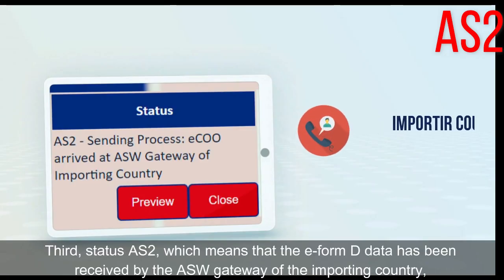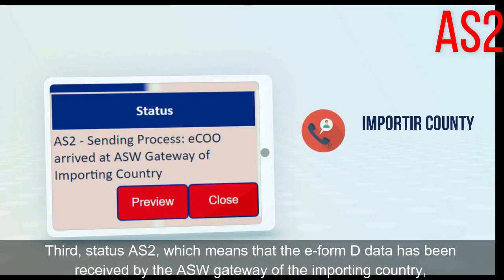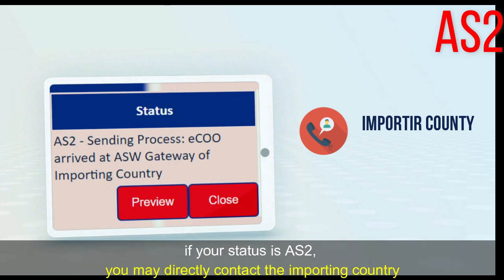Third, Status AS2, which means that the e-form D data has been received by the ASW Gateway of the Importing Country. If your status is AS2, you may directly contact the Importing Country.